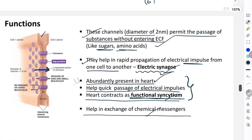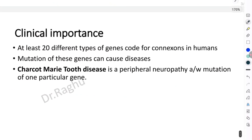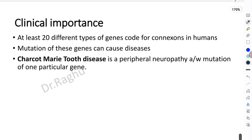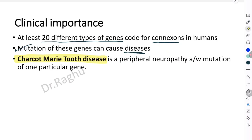Coming to the clinical importance: connexons are coded by at least 20 different types of genes. If there is any mutation of these genes, it results in diseases. One such disease is Charcot-Marie-Tooth disease, which is caused by mutation of a particular connexin gene, resulting in peripheral neuropathy.